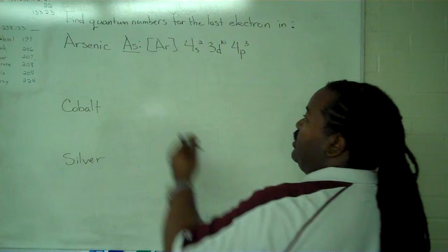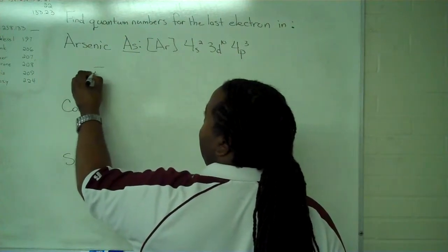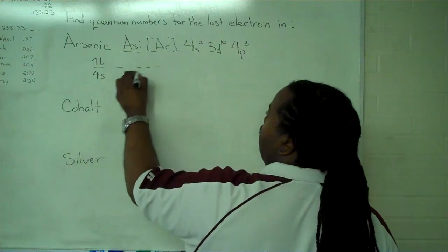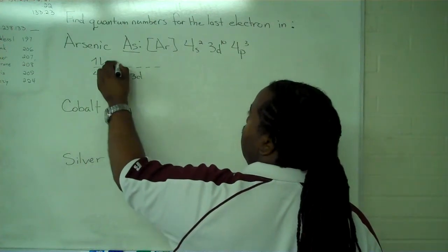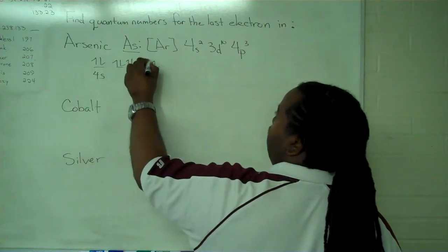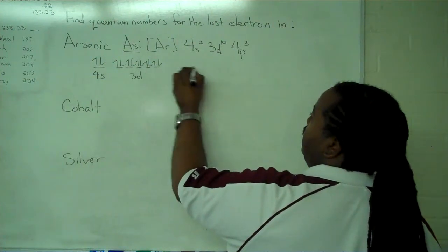Once we have that, we can write out our occupancy diagram. 4s has 1, 2; our 3d. For the 4p, we're going to spin everything up, and then spin everything down. And then finally, for the 4p, we want to make sure we label everything.